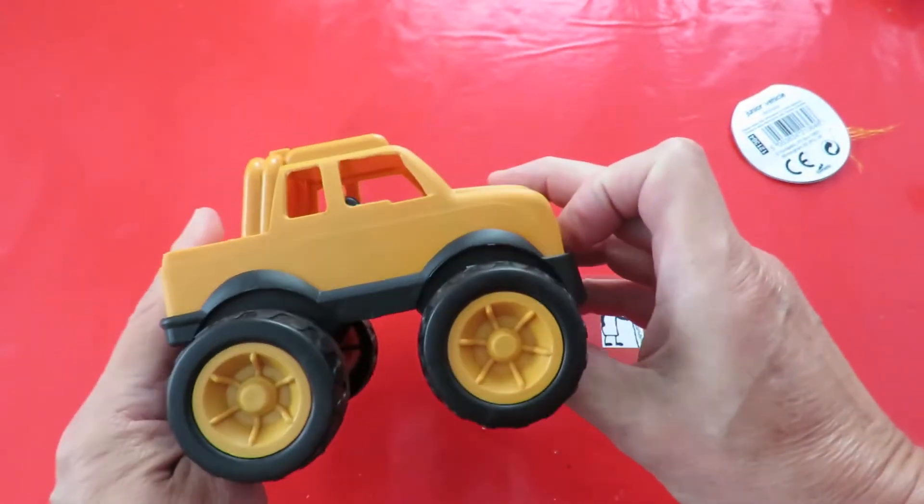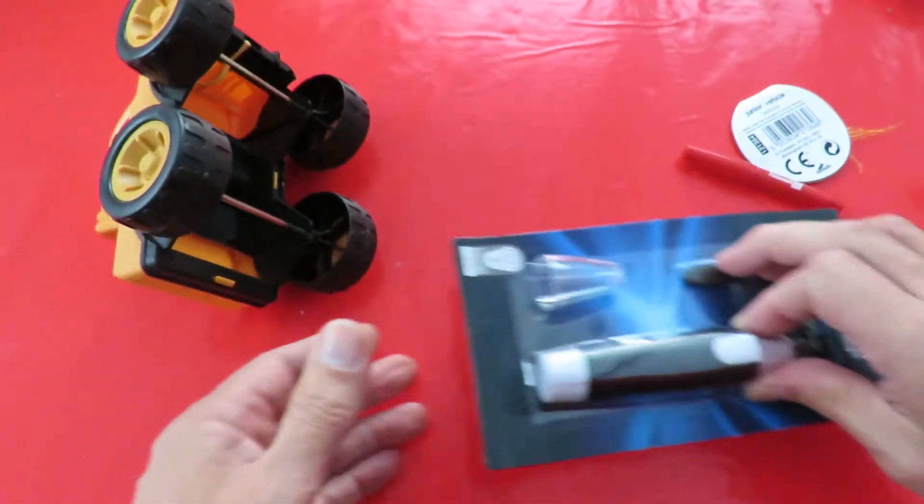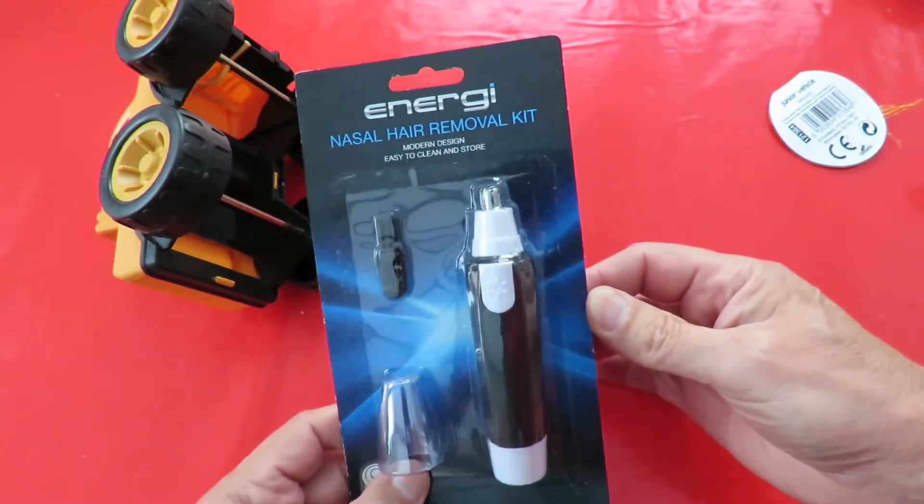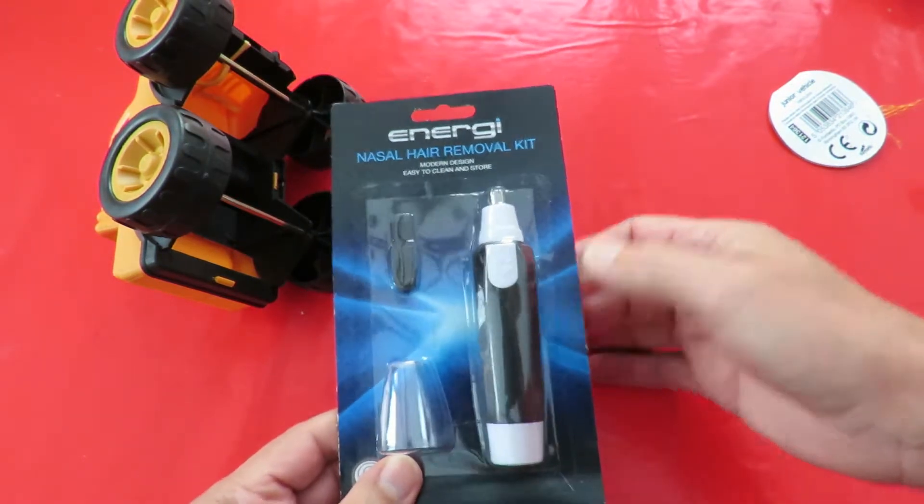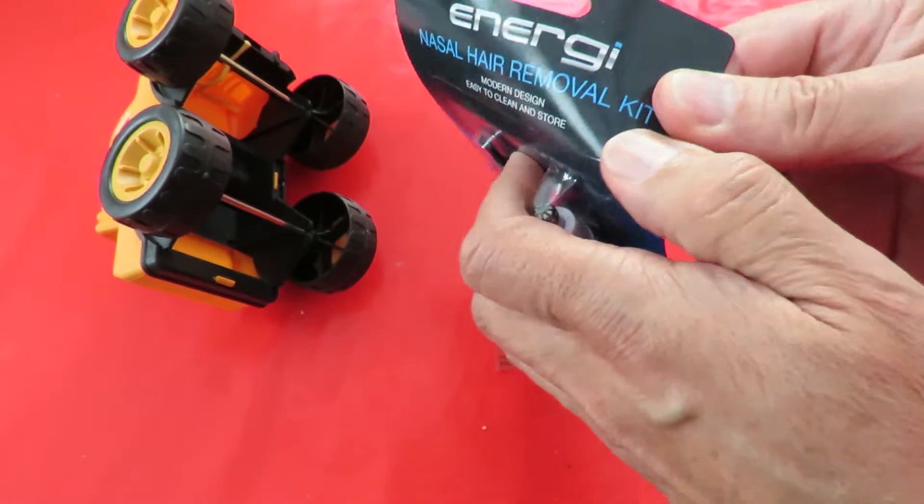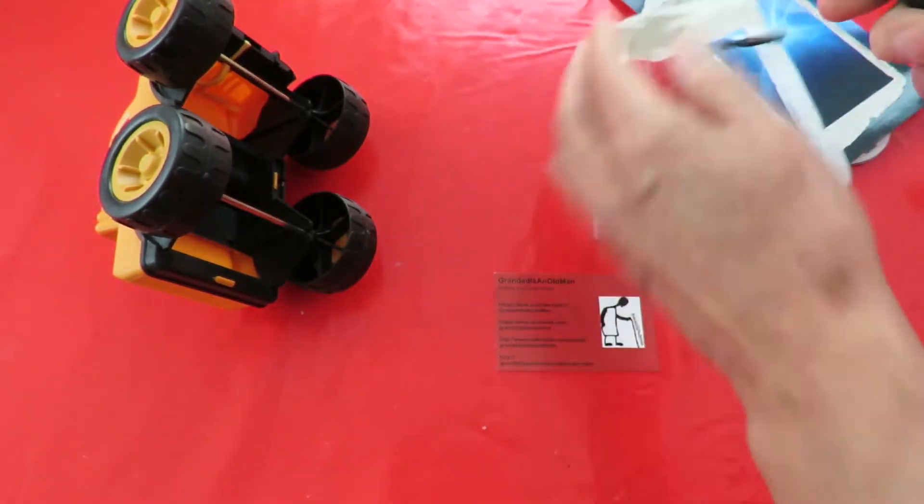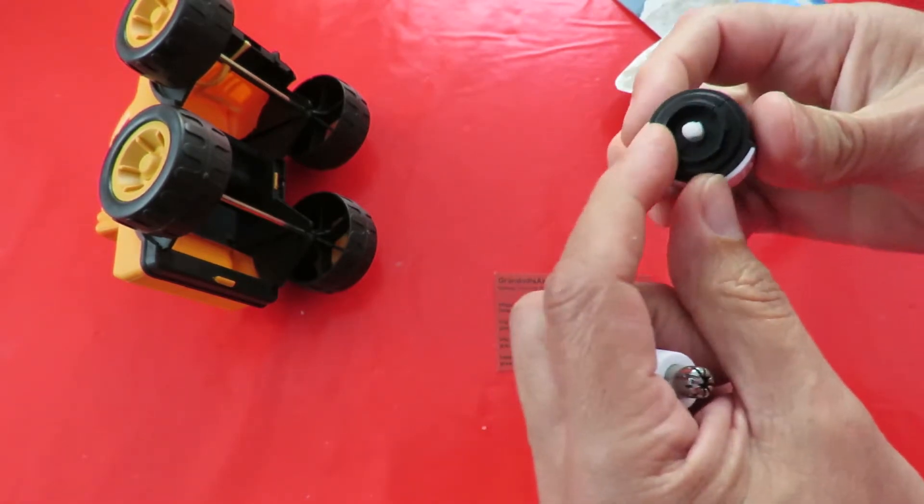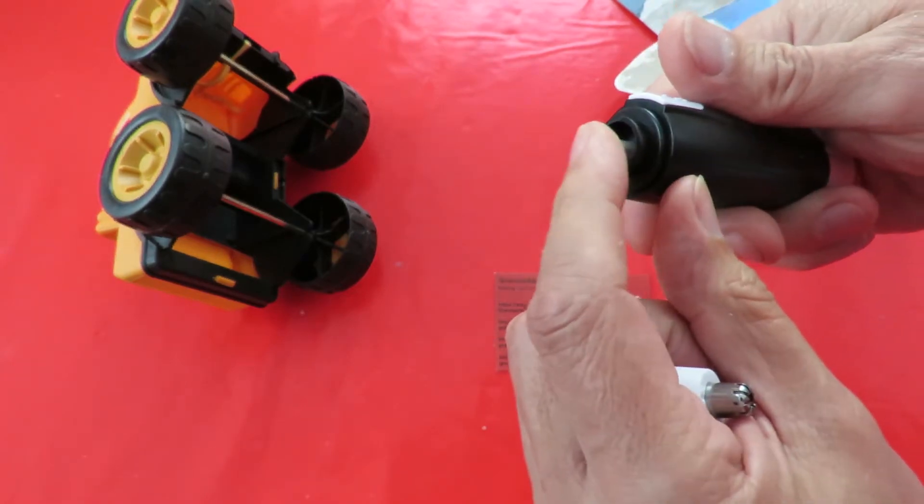Now I want to see if I can put an electric motor in here. So I've been to Poundland again and I've got a nasal hair removal kit because I've used these before. I've got an electric motor in there with a handy little shaft sticking out here.